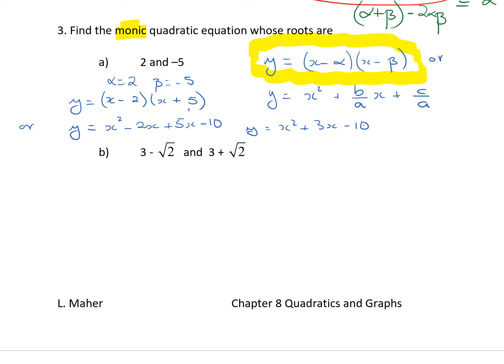Now, have we got that, b on a is the sum of the roots, yes, 2 minus 5 is minus the sum of the roots, minus 3. And.